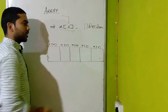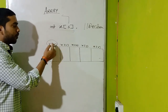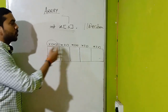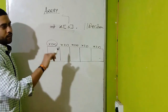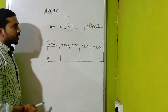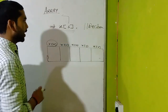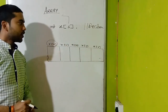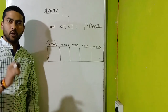x[0] se start hota hai, values store kar sakti hain, aur jab bhi hamen un values ki requirement ho, to hum is variable name se usko access kar sakte hain. x[0] yeh pura ek name hai is block ka — aap ek variable name ki tarah isko kahin par bhi use kar sakte hain. Array ke andar values put karni ho to kisi bhi variable ko value dene ke do tarike hote hain: ek initialization, aur doosra user input.